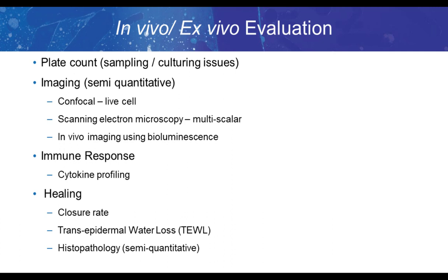In terms of in vivo and ex vivo evaluations of biofilms, once we have these models, what can we do in terms of counting and evaluating? There's plate counting, but we have issues with sampling and culturing — are we getting the bacteria off? If they're in biofilm mode, they're often difficult to culture because they go into dormancy. We can use imaging: ex vivo through confocal imaging or scanning electron imaging of biopsies, or if we use bioluminescent strains, we can do in vivo imaging more conducive for small animal models like rabbits or mice. In terms of animal models or cell lines, we can look at the cytokine profile, which gives us more information about how the body is responding.